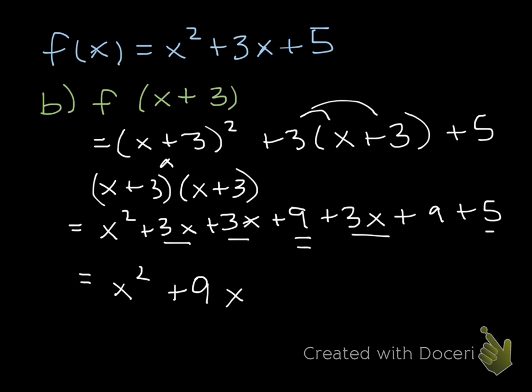And then I have 9 plus 5 plus another 9, so plus 23. So when I inputted the x plus 3, my output is x squared plus 9x plus 23.